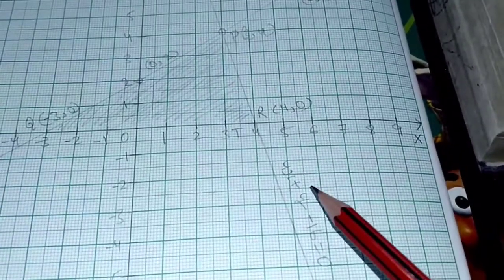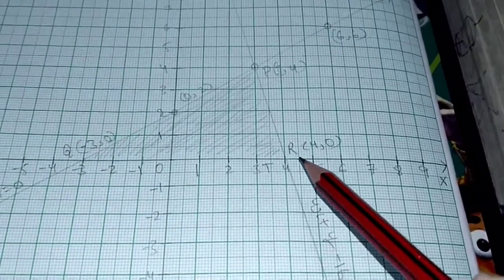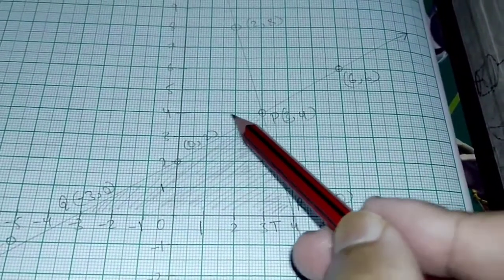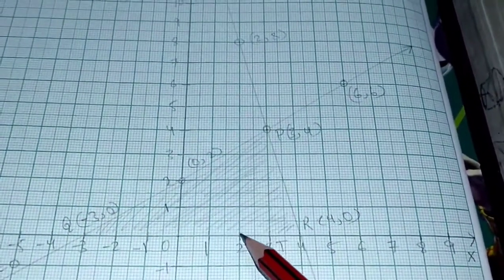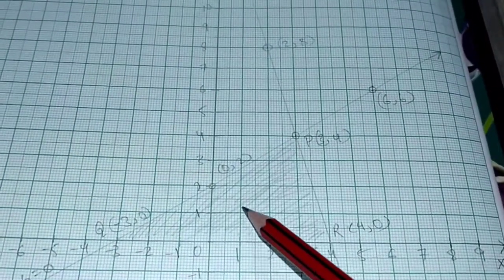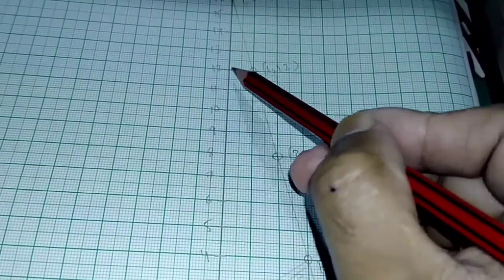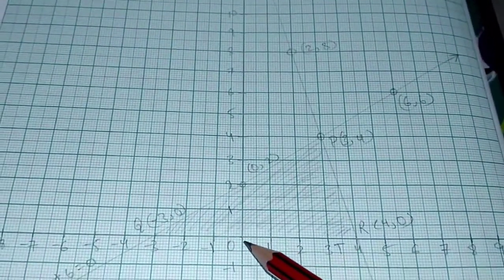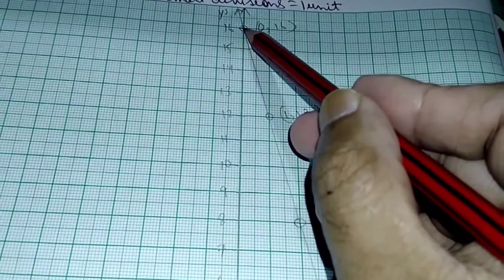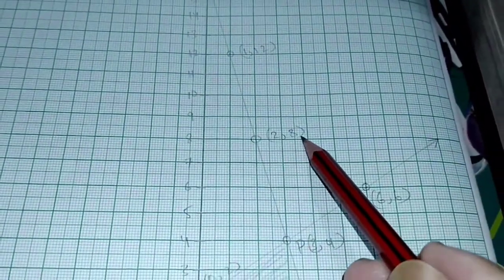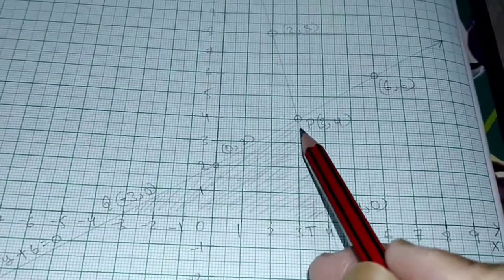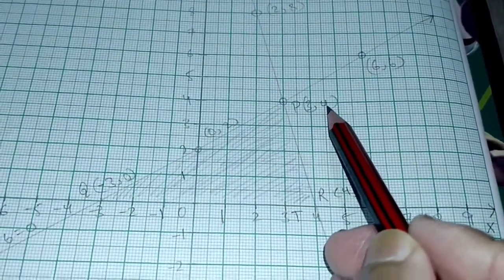For equation 4x plus y minus 16 equals 0, plotting the points: x is 3, y is 4; x is 2, y is 8; x is 1, y is 12; x is 0, y is 16. The solution is x equals 3, y equals 4.